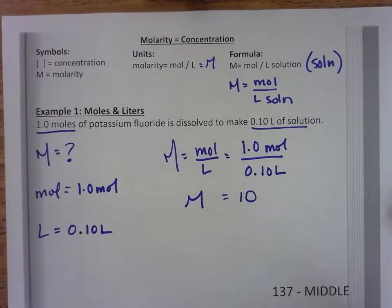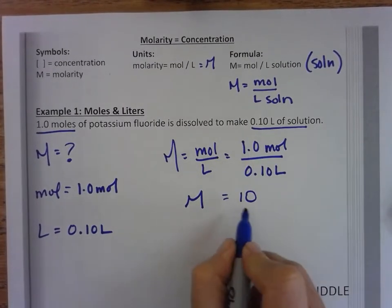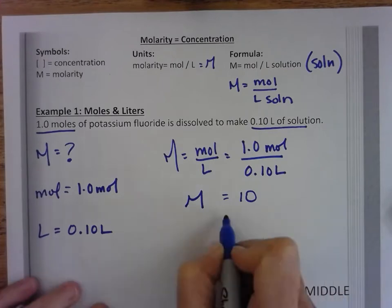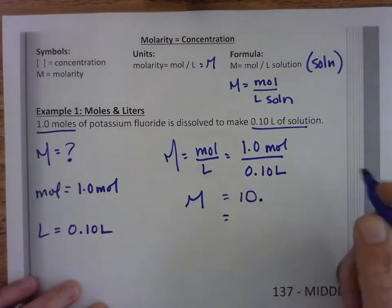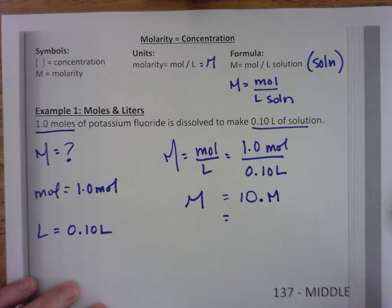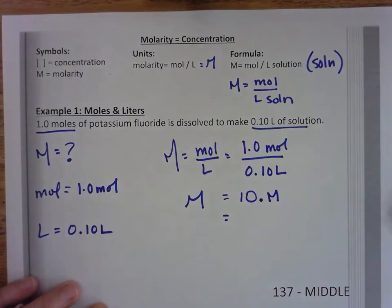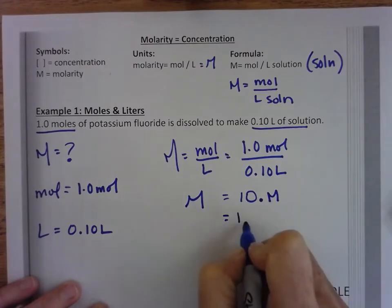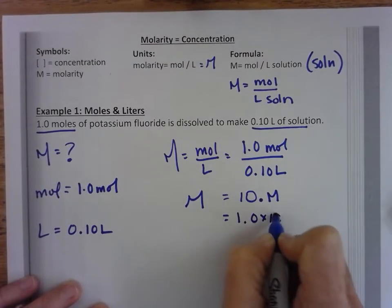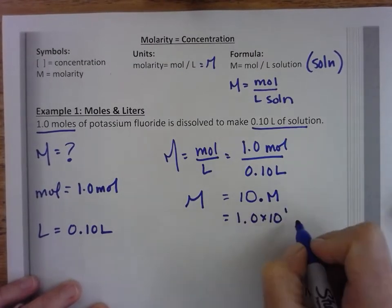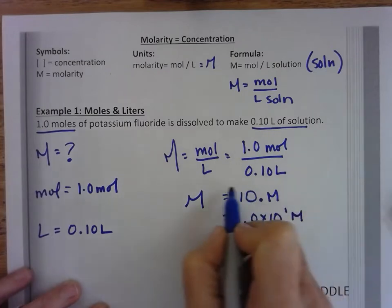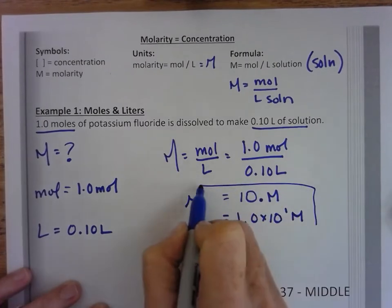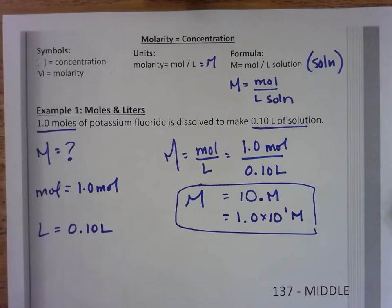But both of these have two significant figures. So to write this, I have two options. I can do 10 with a decimal. This decimal makes that 0 significant. And then I put the big M for molarity. Or I can write the number in scientific notation, which also gives me the decimal to make as many zeros significant as I want.